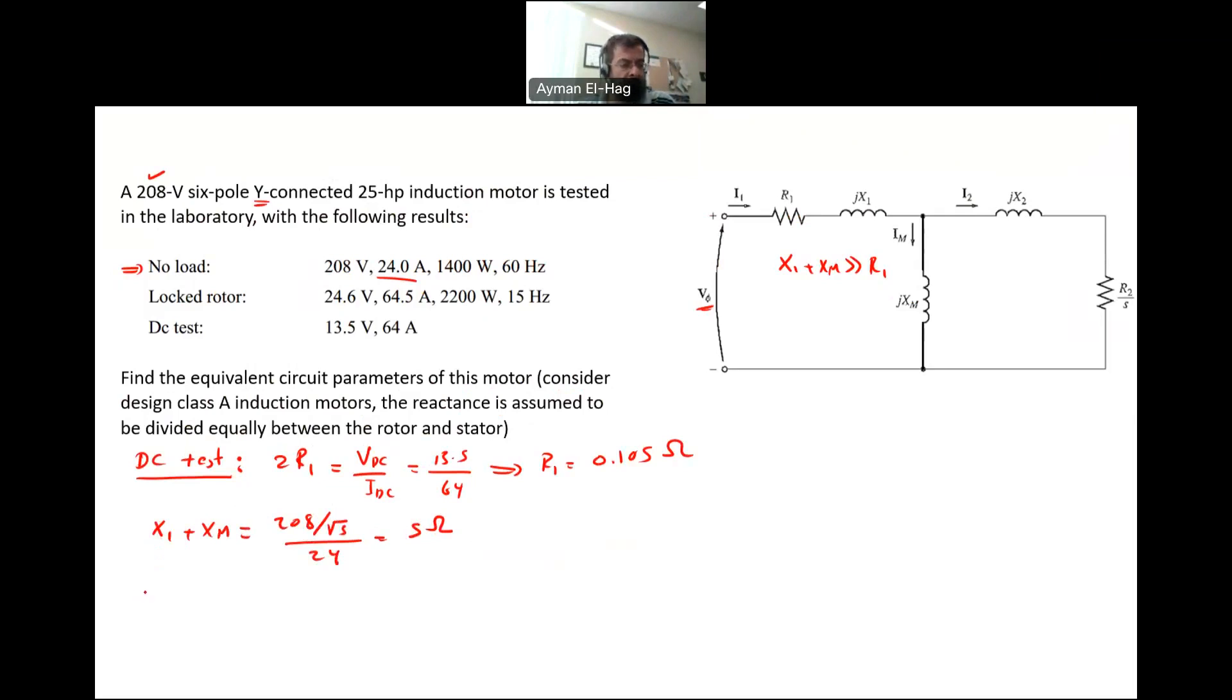Now let's see the locked rotor test. In the locked rotor test, we will find the total Z locked rotor, which equals the voltage 24.6 divided by the current 64.5. This gives me a total impedance of 0.22 ohm. This is the magnitude of R1 plus R2 plus j times X1 plus X2. I need to split the real part from the imaginary part.